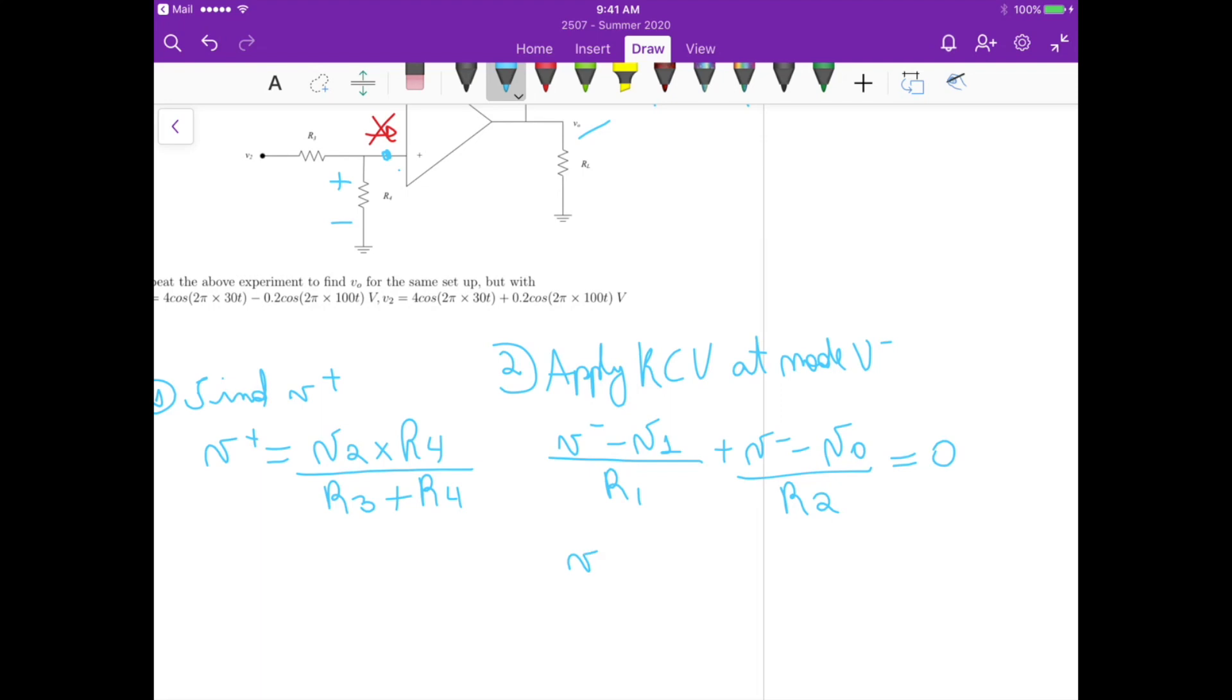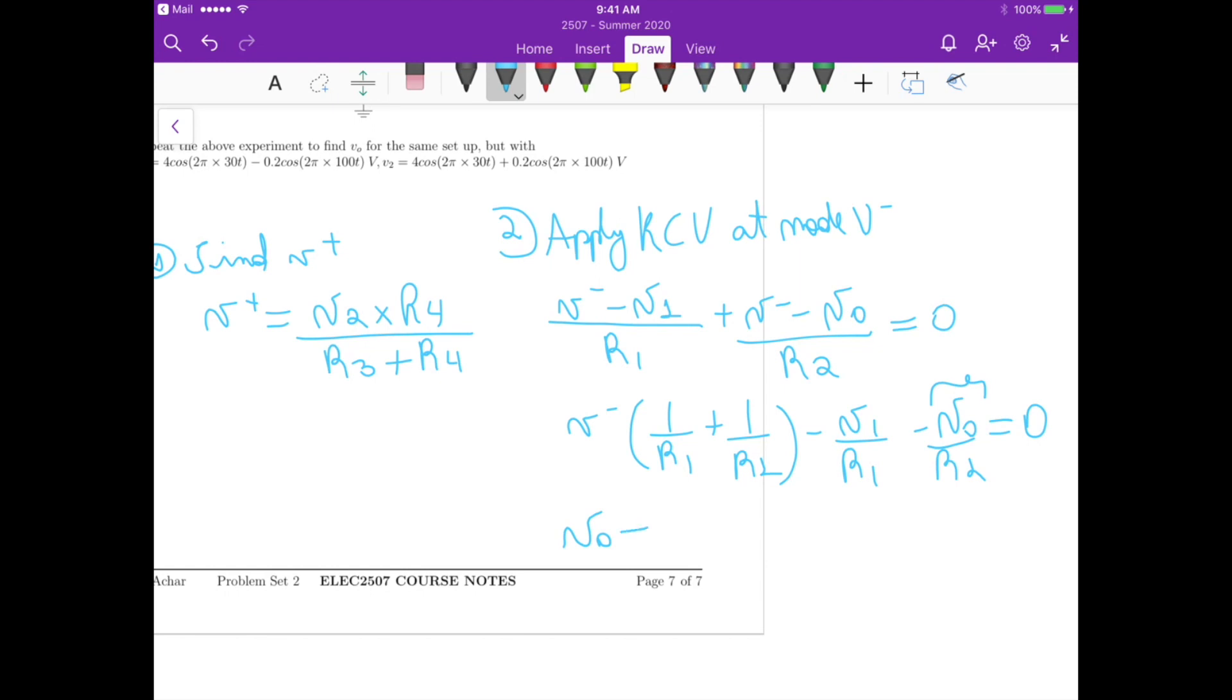We get that V minus times 1 over R1 plus 1 over R2, minus V1 divided by R1, minus V0 divided by R2, that's equals to 0. So now we can basically isolate V out from this equation here, so this gives us V out equals to V minus, and then we have this R2 here that basically multiplies everything, so it becomes 1 plus R2 over R1 times V minus minus R2 over R1 times V1. So this is the equation for V out.